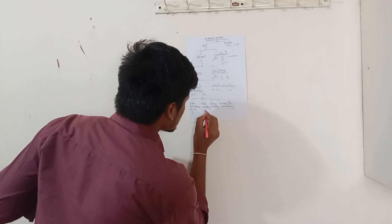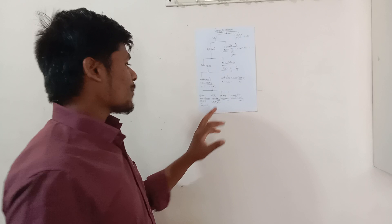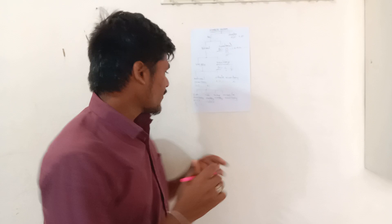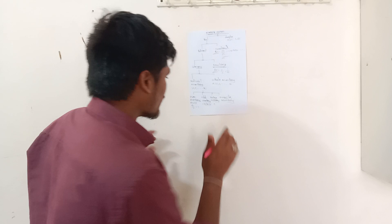Prime numbers are the numbers which have only two divisors and can be divided by only two numbers. For example, 2 can be divided by 1 and 2, so it is a prime number. Examples of prime numbers are 2, 3, 5, 7, 11, and so on.